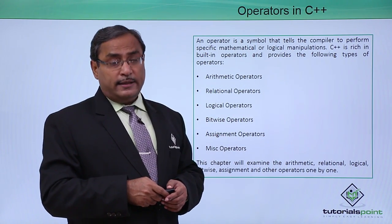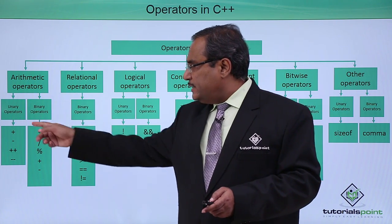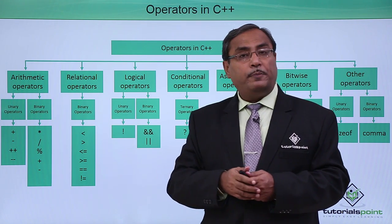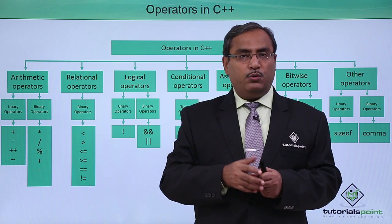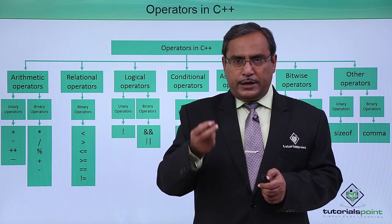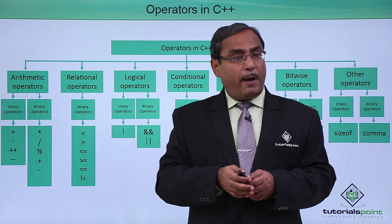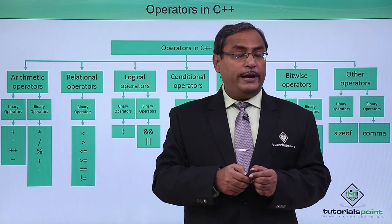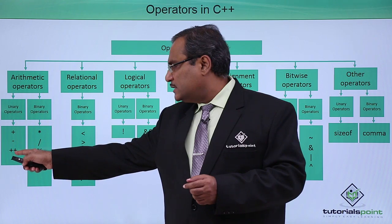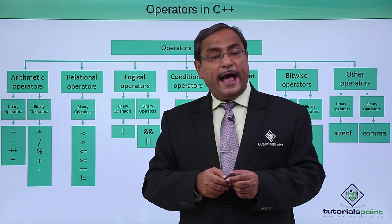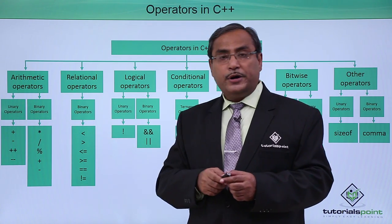Here is the list for us. First, we are going to discuss the arithmetic operators. It can have unary operators and binary operators. Unary operators are those operators which will have only one operand on which they will be operating. But in case of binary operators, it will require two operands. So here we have plus, minus, plus-plus, and minus-minus as unary operators, and a list of binary operators as well.